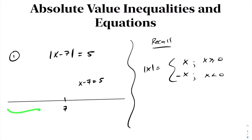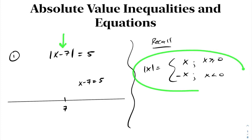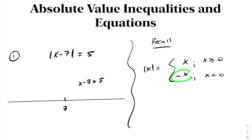The same is not true for this interval. Any number we choose less than 7 will result in the absolute value of a negative number. For us to drop the absolute value sign, by definition, we must multiply the input by a minus sign. So on this side of the equation, it becomes negative in brackets x minus 7 equals 5. Therefore, what we need to do now to solve our absolute value equation is to solve the following two equations, which will yield us two different answers.